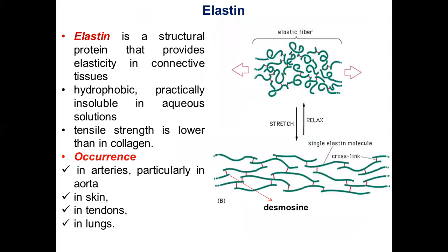Elastin is a structural protein that provides elasticity in connective tissue. It is a hydrophobic protein with lower tensile strength than collagen. Elastin occurs in arteries, skin, tendons, and lungs.